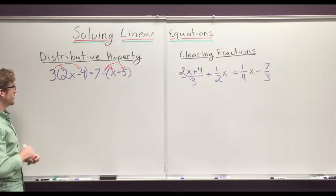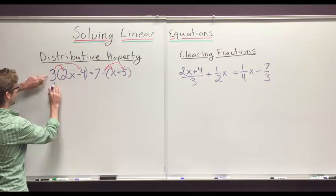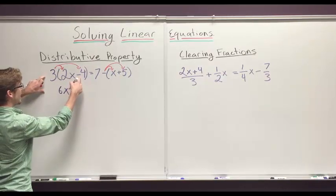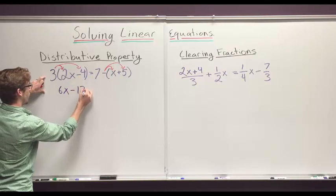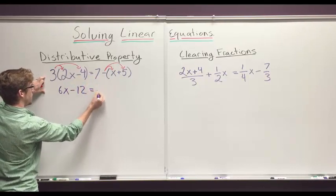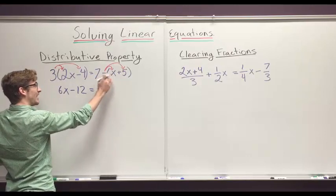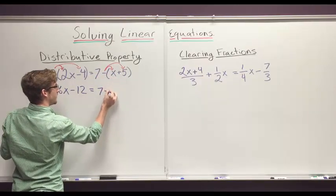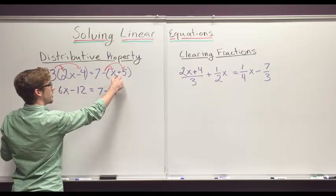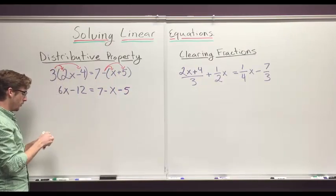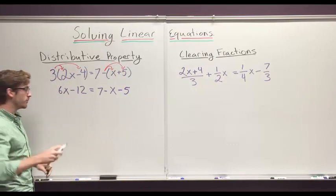So what happens whenever we do that? We get 3 times 2x, well that's 6x. 3 times negative 4, that's negative 12, equals 7 stays. Negative times x is negative x. Negative times positive 5 is negative 5.